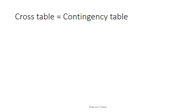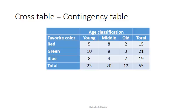A cross table or contingency table is a table that shows two variables at the same time. For example, here's a cross table showing the results of the age classification of young, middle, and old, versus the results of the favorite color. So for example, this four means that there were four middle-aged people who have as a favorite color blue. These are the columns, and these are the rows.